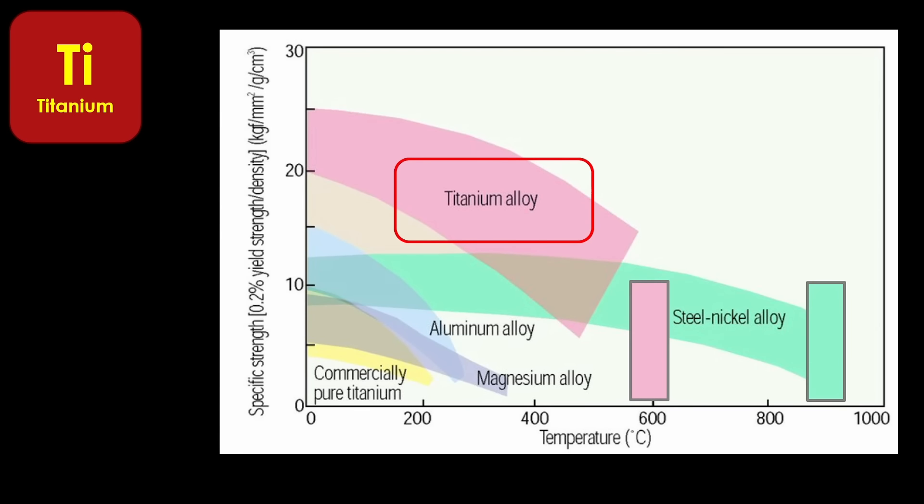304 stainless is heat resistant up to about 870 degrees centigrade, and the best titanium alloys only go up to about 600 degrees. That is a significant disadvantage for Starship because of reentry heating. You may be able to keep the titanium from getting too hot, but that will likely involve a heavier thermal protection system.